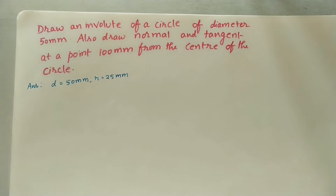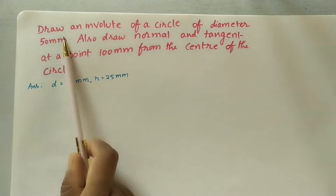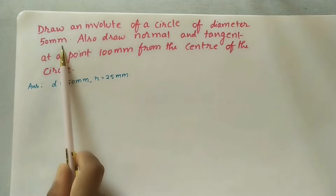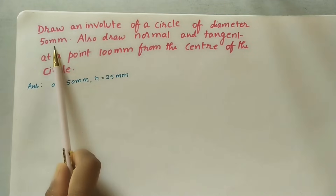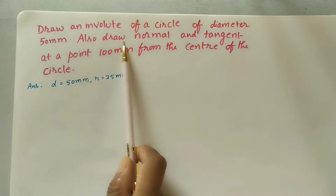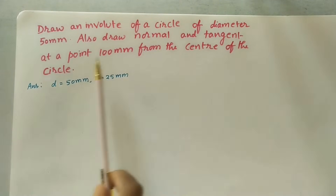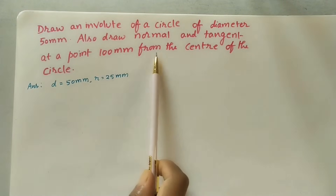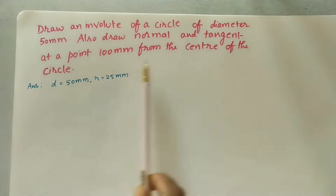Hi to all. Today we will discuss how to draw an involute of a circle. The given question is: draw an involute of a circle of diameter 50 mm. Also draw a normal and tangent at a point 100 mm from the center of the circle.